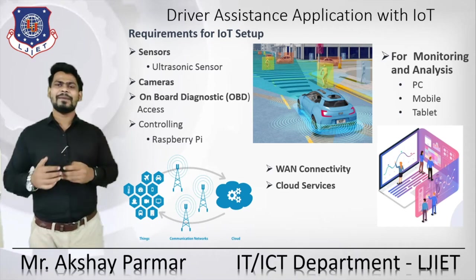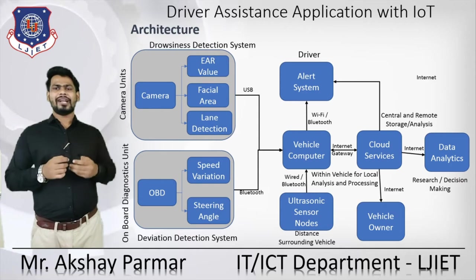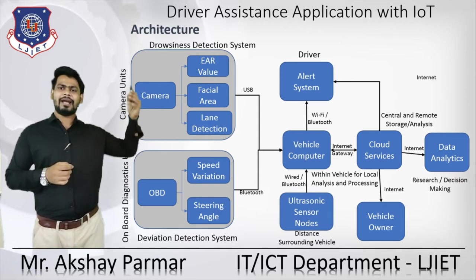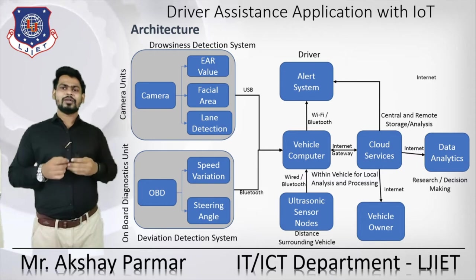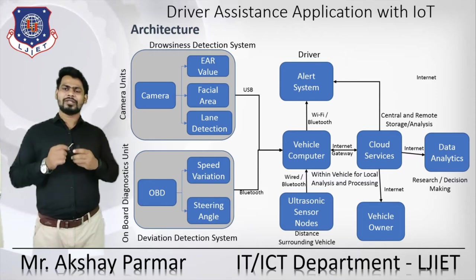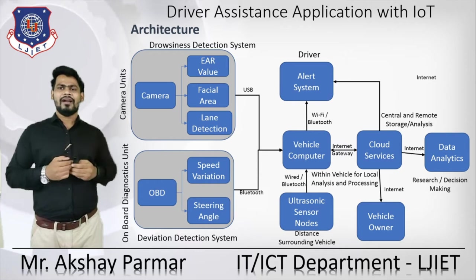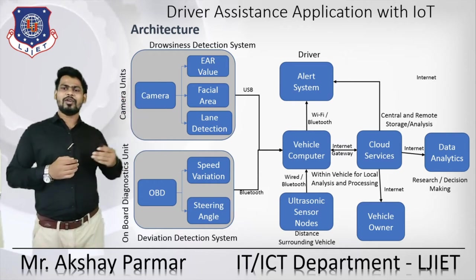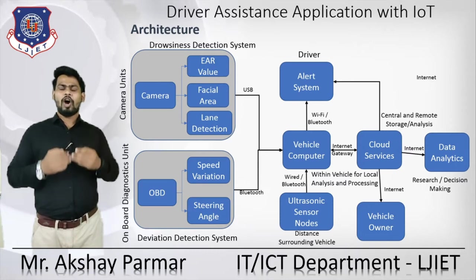Let's see the basic architecture for this kind of application. First, we have a drowsiness detection system. For that, we are using a camera. With the help of image processing, we can detect drowsiness for that particular driver. For that we have a camera unit as well as an OBD — the onboard diagnostics unit.